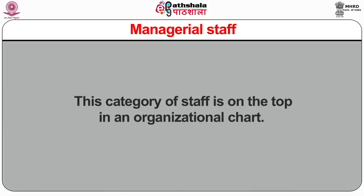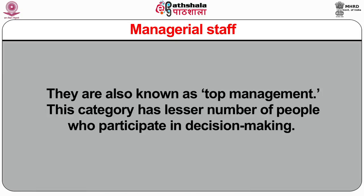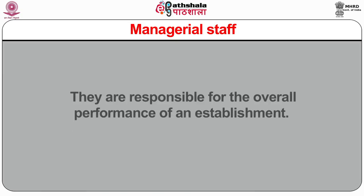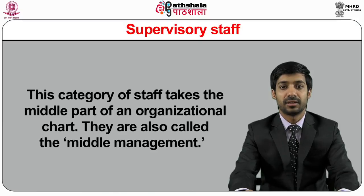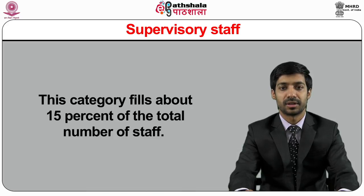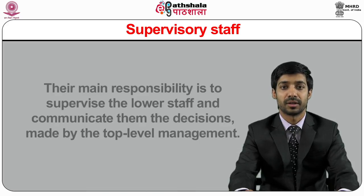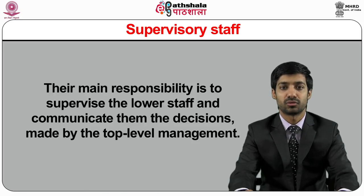Managerial staff is on the top in an organizational chart. They are known as top management. This category has a lesser number of people who participate in decision making, and they are responsible for the overall performance of an establishment. Supervisory staff takes the middle part of an organizational chart; they are also called the middle management. This category fills about 15% of the total number of staff working in an organization. Their main responsibility is to supervise the lower staff and communicate the decisions made by the top level management.